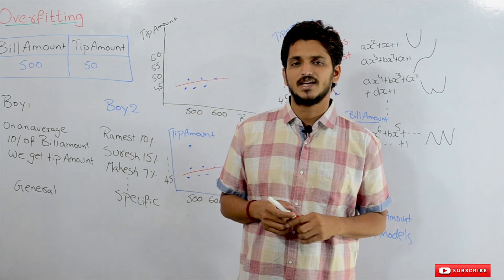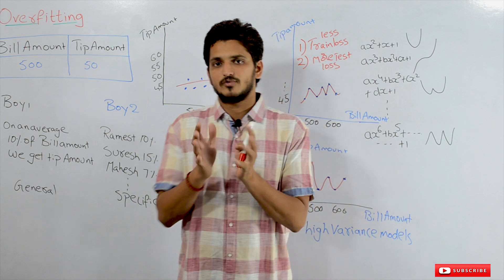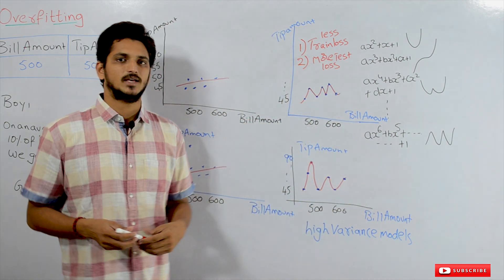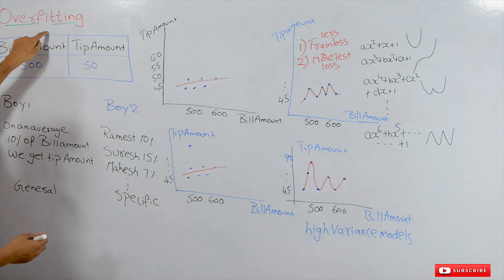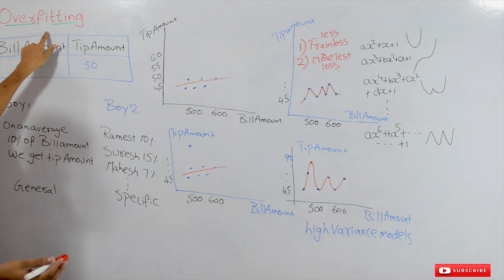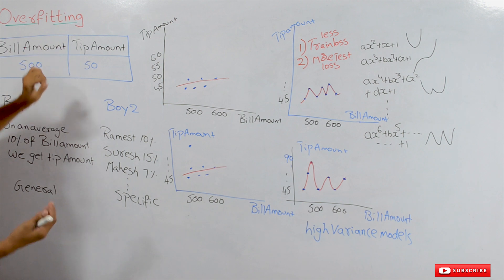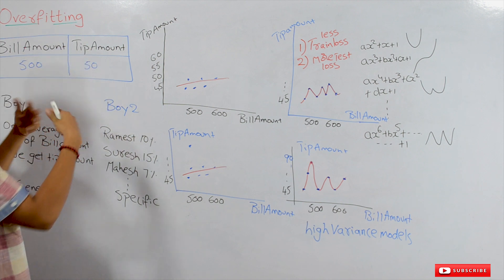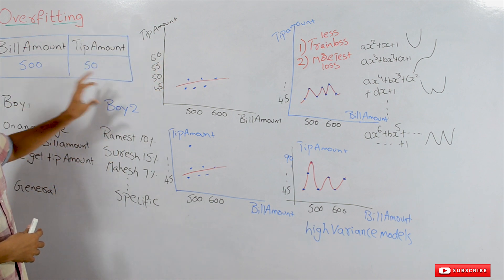Now let's take an example and understand in a general sense what overfitting is. Then we will go into what overfitting is mathematically. The example we consider here is the tip amount prediction dataset, which we have been using for many previous classes, so we won't spend much time on the dataset itself.